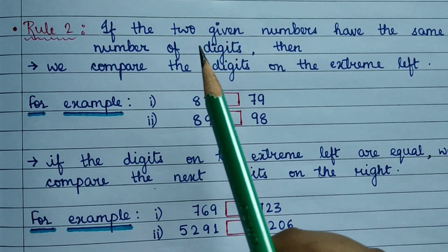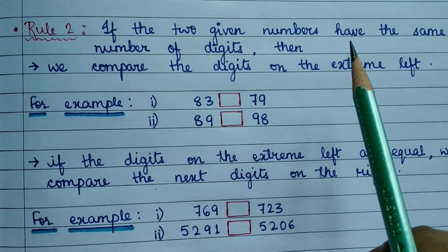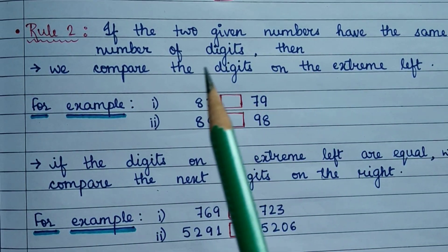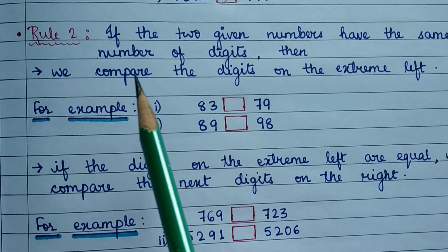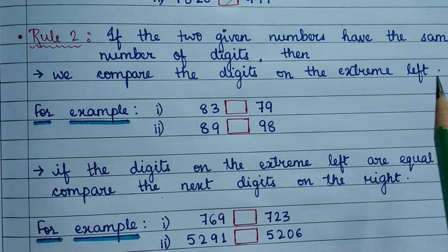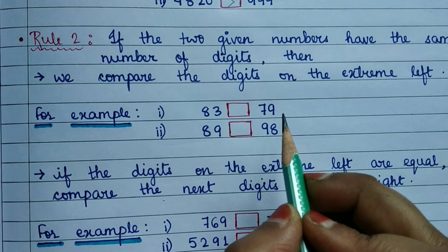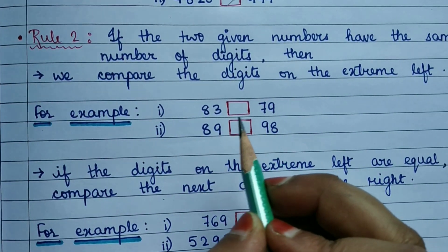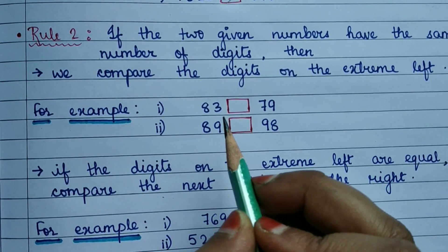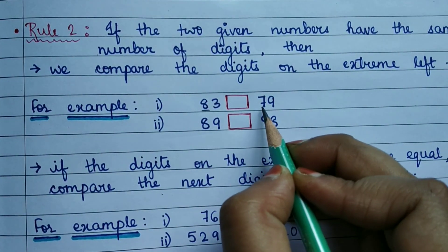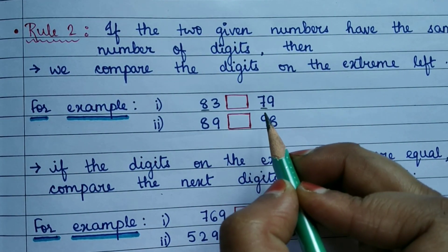If the two given numbers have the same number of digits, then hum kya karengi? We compare the digits on the extreme left. For example, if we have two numbers with the same number of digits, we will compare the digit on the extreme left.